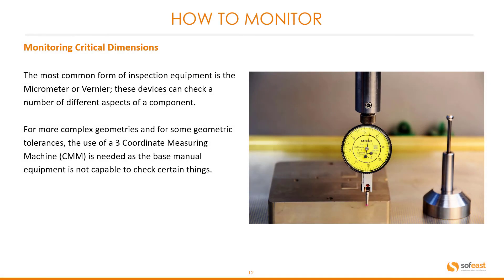How to monitor critical dimensions. The most common form of inspection equipment is the micrometer or vernier caliper. These devices can check a number of different aspects of a component. For more complex geometries and geometric tolerances, the use of a 3-coordinate measuring machine, or CMM, is needed, as basic manual equipment is not capable of checking certain things.